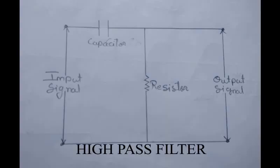A simple high pass filter or HPF can be easily made by connecting together in series a single resistor with a single capacitor as shown in the diagram. In this type of filter arrangement, the input signal is applied to the series combination, but the output signal is taken across the resistor only.